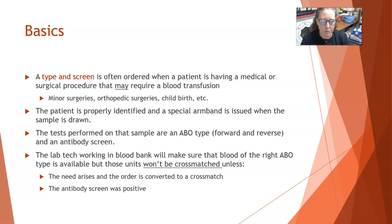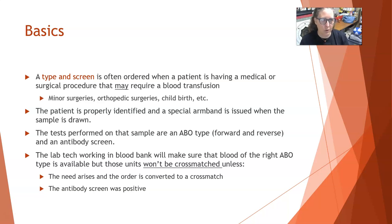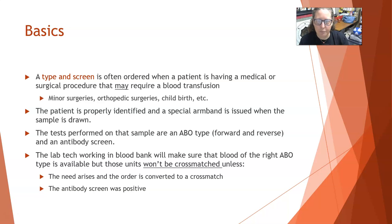This includes regular vaginal delivery — you still do a type and screen on the mother. The patient is properly identified and a special blood bank armband is issued when the sample is drawn. It has numbers on it, and these numbers on the armband also go on all the tubes of blood and the paperwork that pertains to this type and screen.